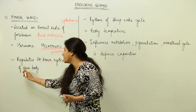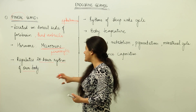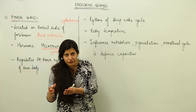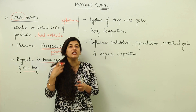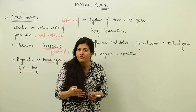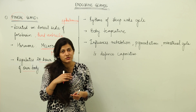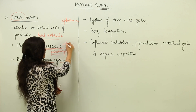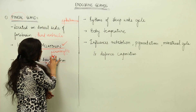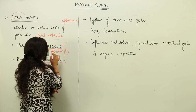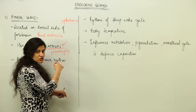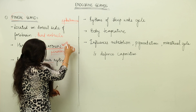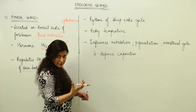The pineal gland secretes melatonin, which is very important for regulating the 24-hour rhythm of the body, otherwise known as the circadian cycle. The body has its own clock — it knows when puberty should arrive and when the senescence period should start — and this clock is regulated by melatonin, which is a derivative of tryptophan.